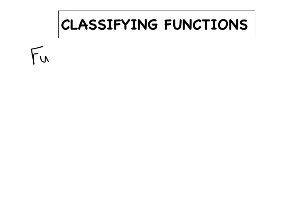Welcome back to another flipped classroom video. Today we're going to talk about classifying functions more specifically. As a review from the other day, if we wanted to determine whether a relation was a function or not, we simply applied the vertical line test to our graphs, or if it wasn't a graph, we just had to ask ourselves: did every input correspond to only one output? Now today we're going to dive a little deeper and classify these functions more specifically.